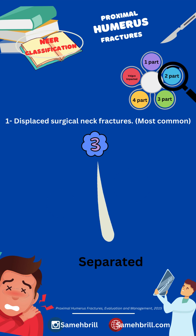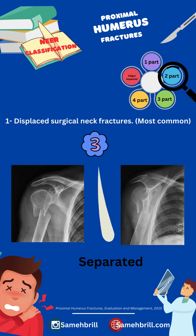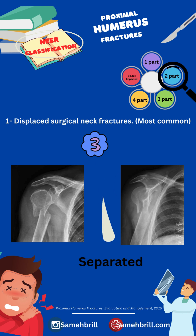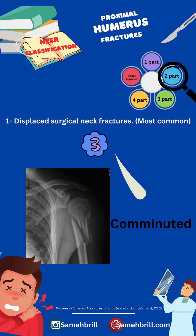The second type, the separated type, has the periosteum completely disrupted, and the pectoralis major pulls the shaft fragment anteriorly and medially. The third type is the comminuted type, in which the comminution is seen extending distally from the surgical neck.